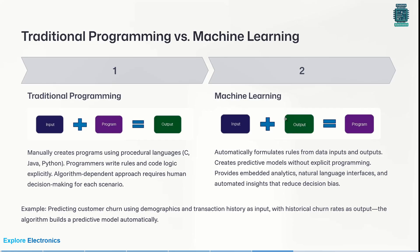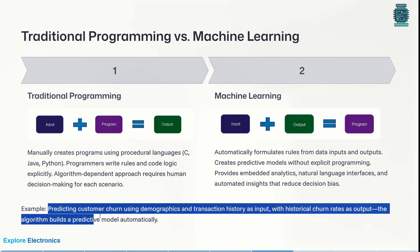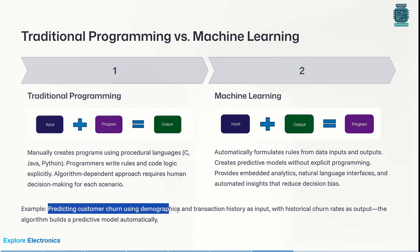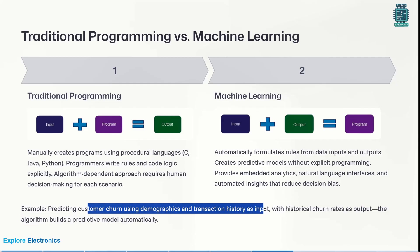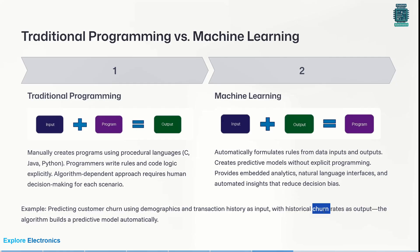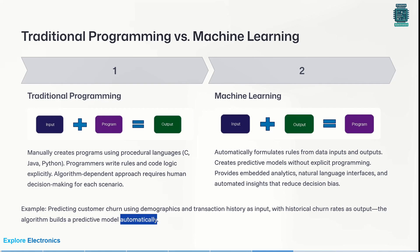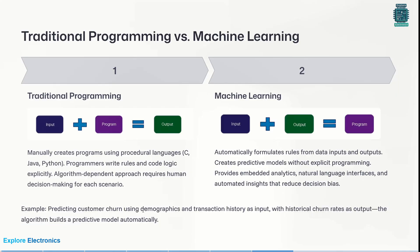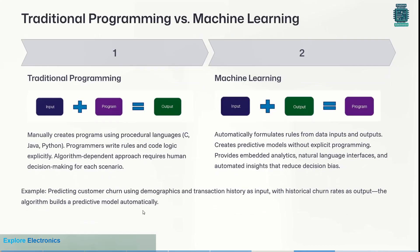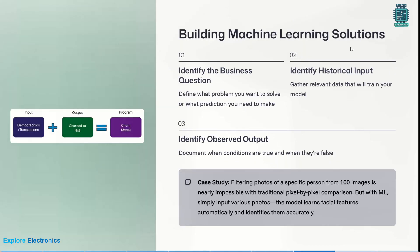For example, predicting customer churn: using customer demographics and transaction history as input, with historical churn rates as output. The algorithm will automatically build predictive models to predict how a customer will behave with respect to the products.